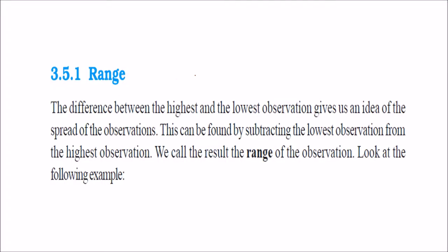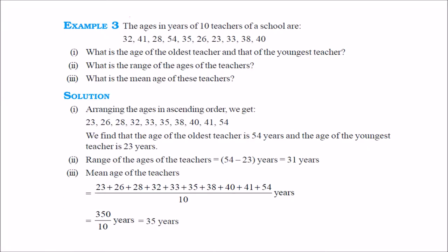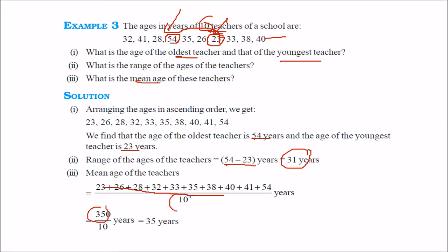Now, range. Range is nothing but the difference of the highest and lowest value — you subtract the lowest from the highest to get the range. For example, the ages of 10 teachers of a school are given. The oldest teacher is 54 years and the youngest is 23 years. The range of ages is 54 minus 23, which equals 31. You can also find the mean: adding all ages gives 350, divided by 10 equals 35 years.